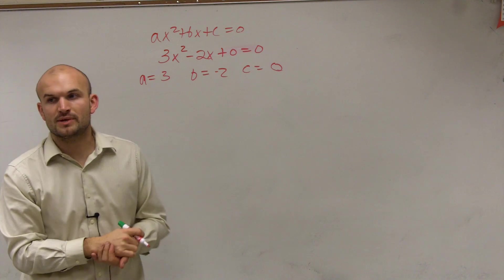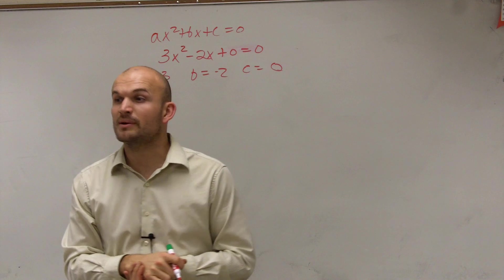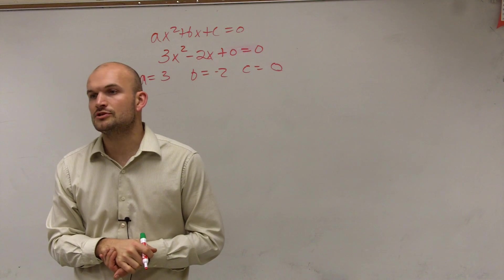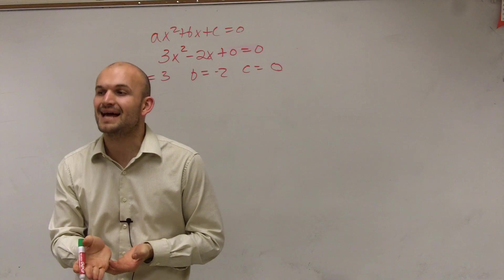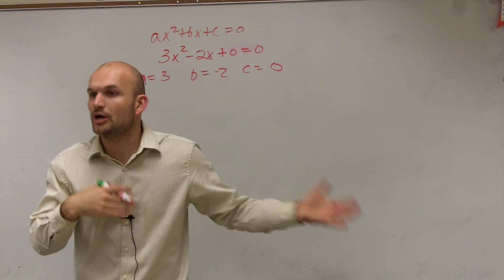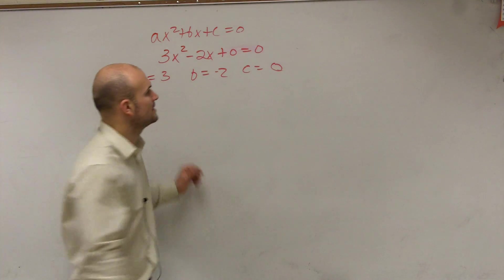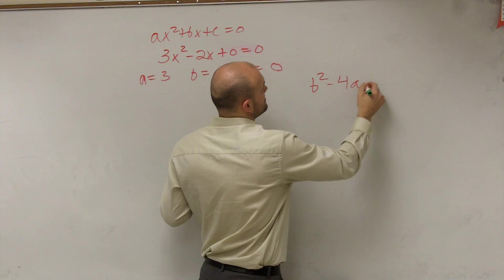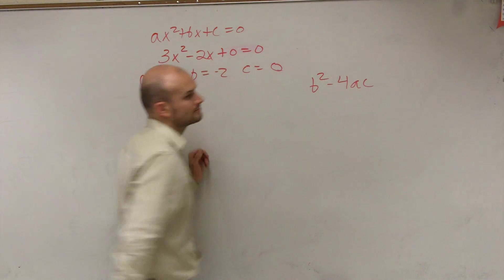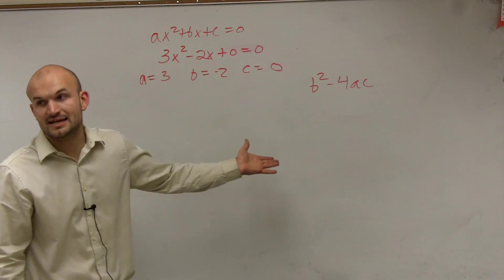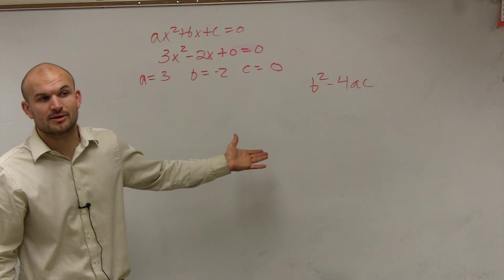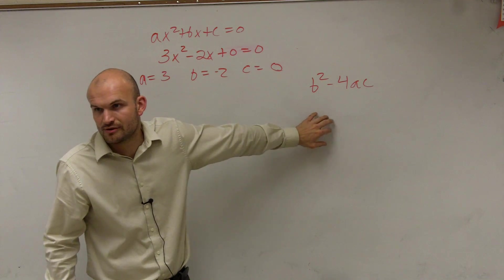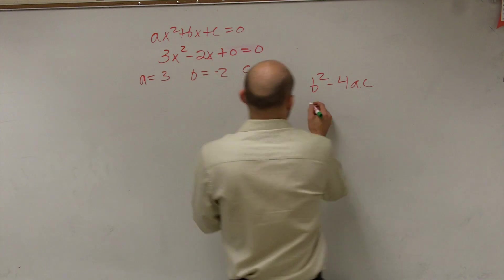The first thing we always want to do when solving by quadratic formula is to do the discriminant first. I like to do the discriminant first because it helps me understand what was being done. Remember the discriminant is b squared minus 4 times a times c.